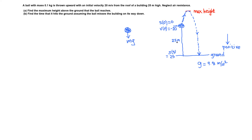The initial position of the ball is 25 meters high, and we set the initial position s(0) equal to 0. Going downward is positive, so the ground level will be s(t) = 25. The ball is thrown upward, so upward is negative, giving an initial velocity of negative 20 meters per second. The ball reaches maximum height then drops to the ground, and we are neglecting air resistance.